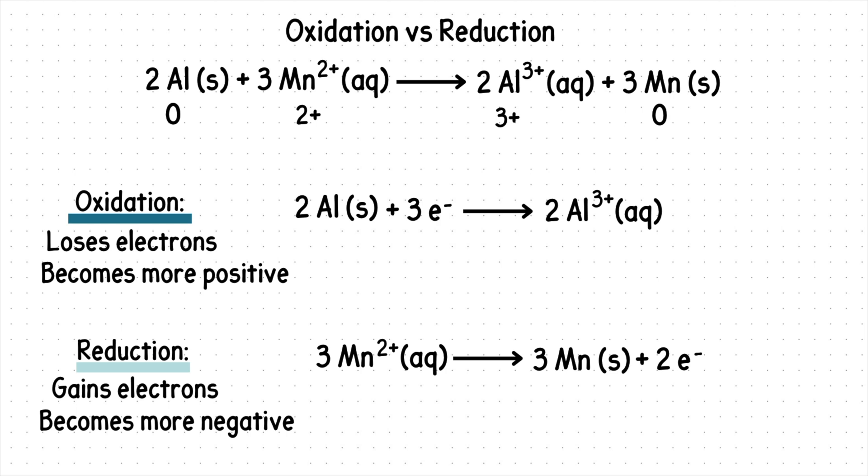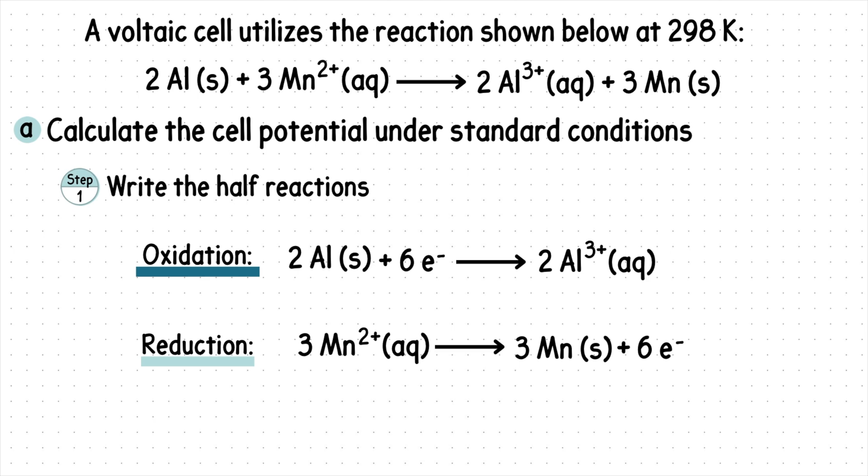Since there is a 2 coefficient here, a 3 coefficient here, and a 3 coefficient here, we are multiplying each coefficient to the electrons in that reaction. So we have 6 electrons in each half reaction. And we finally have our half reactions.